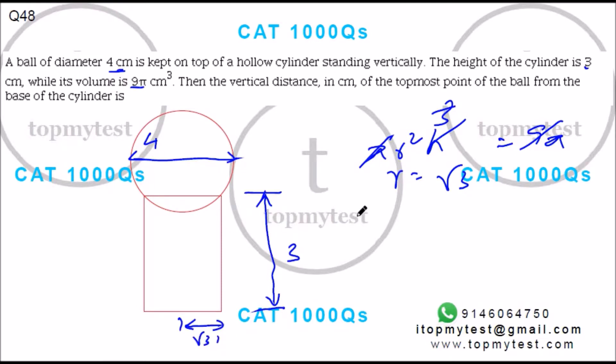Now you need to find what is the height of the topmost position from the bottom. So I need to find this length. I already know this is 3. So if I add this length, that will be the height of the topmost position from the base.